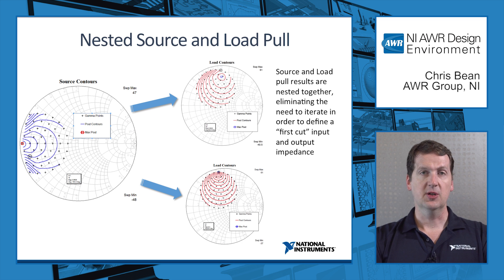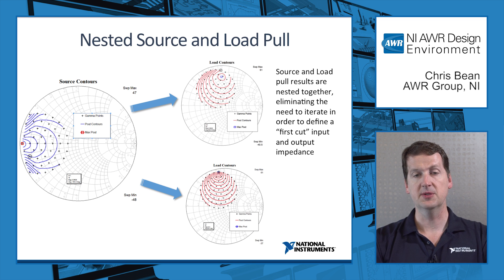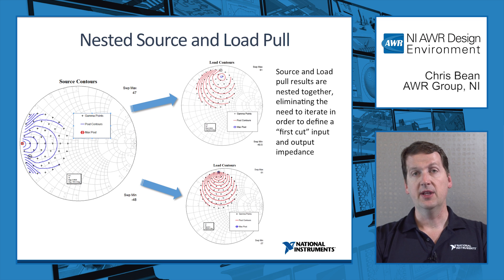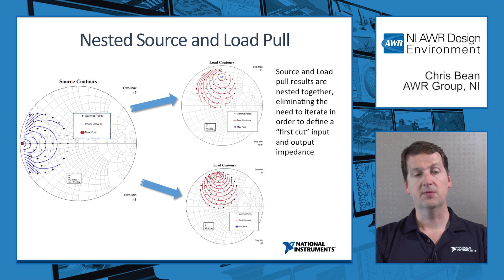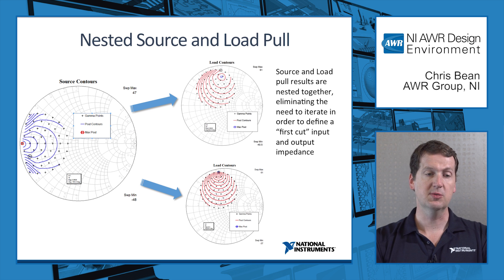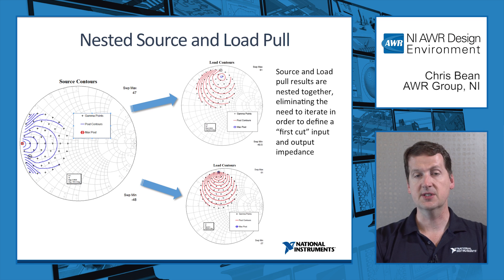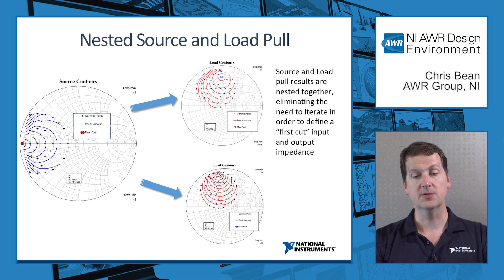Of course, changing load impedance will change the source match, and vice versa — changing the source match will change the performance on the drain side. One way to streamline that is to nest together source and load pull, so you have a load pull data set that contains both. For each source point, you've got a full set of load pull data. Here we can select an impedance on the source side and get a resulting set of contours, and we can change that impedance just by moving markers to get another update on our load pull contours.